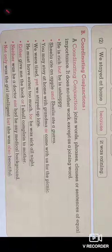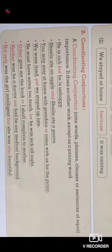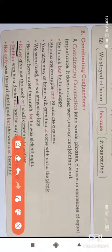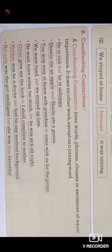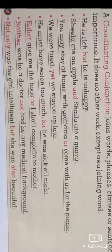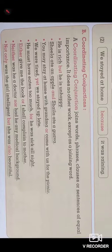Another example uses 'either/or': Either give me the book, or I shall complain to mother — the conjunction used is 'either/or'. Another is 'neither/nor': Neither was he a doctor, nor had he any medical background. 'Either/or' is used in affirmative sentences, while 'neither/nor' is used in negative sentences. Also, 'not only/but also': Not only was the girl intelligent, but she was also beautiful. This is how coordinating conjunctions are used in sentences.